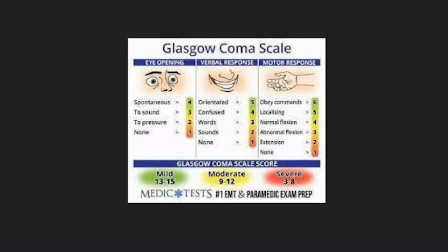Motor response: obeying commands is six points — the patient performs the instructed action normally. Localizing is five points — the patient performs the action in certain regions but not all. Normal flexion is four points; abnormal flexion is three points; extension is two points; and no response at all is one point.